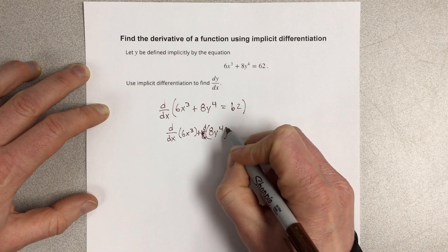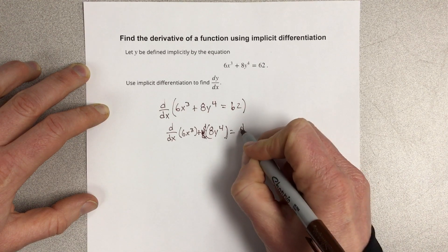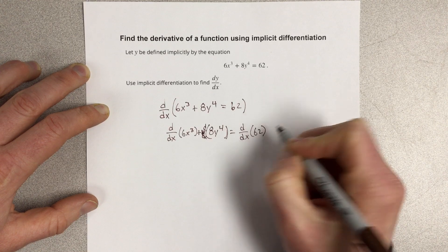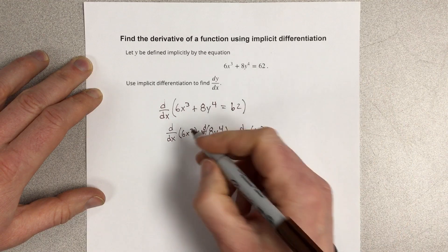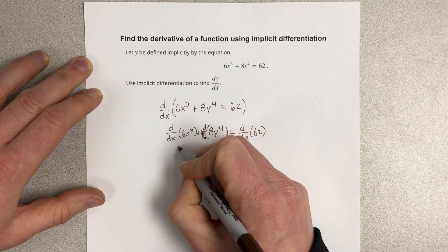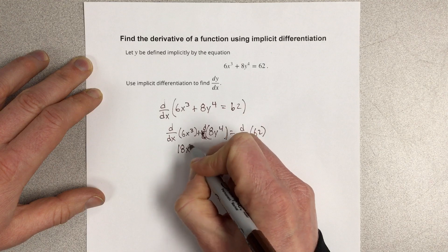8y to the 4th equals the derivative of 62. Now, when you take the derivative with respect to x and you have an x variable, you just take the derivative the normal way and we end up with 18x².